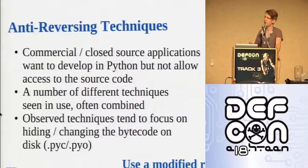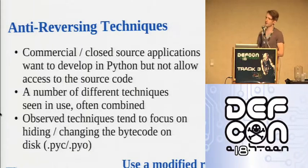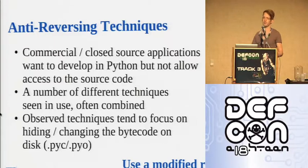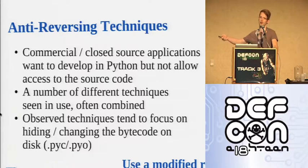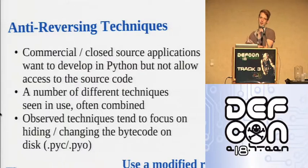What are the anti-reversing techniques in commercial apps? Increasingly, commercial and closed-source apps are putting in obfuscation to stop you getting at their code. All of these techniques mainly focus on when the bytecode is on disk — the .pyc files. They obfuscate the .pyc so it's not in standard form and all the basic tools break. That's pretty much the approach everybody is taking.